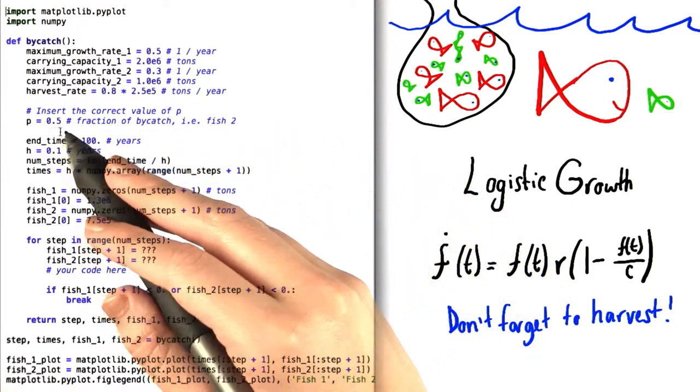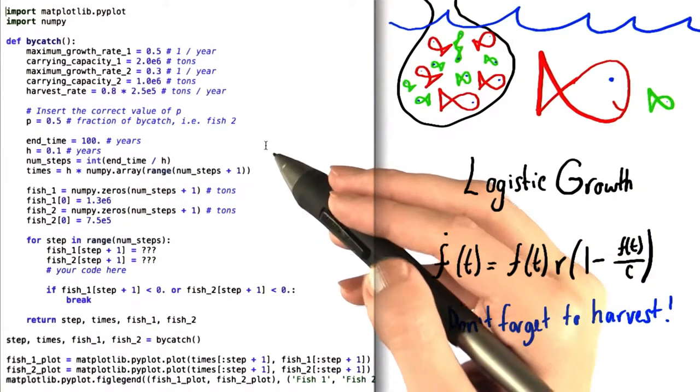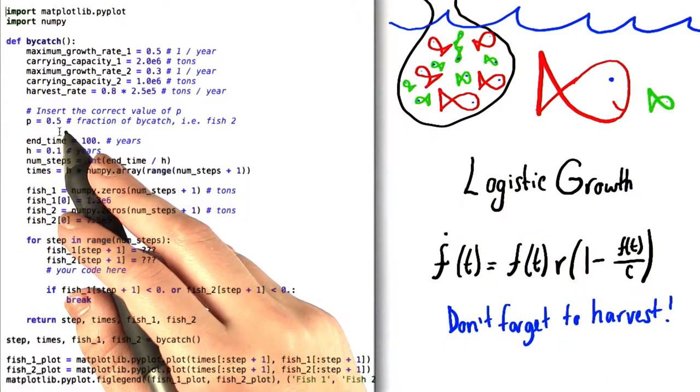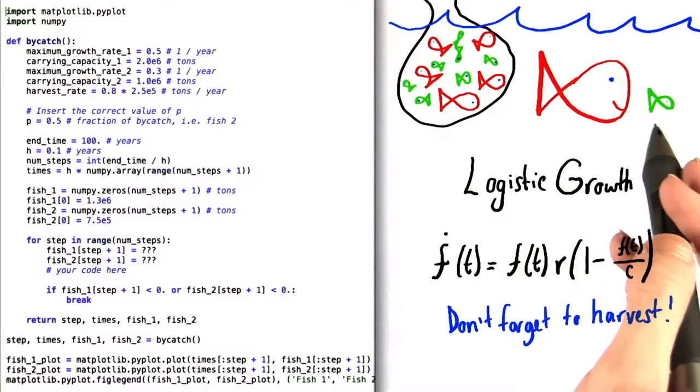Just to start, we've inserted a value of 0.5 for P, but what you're going to do is calculate the threshold value of P for fish 2 to not go extinct. In other words, what is the highest possible value of P that will allow for an equilibrium situation in the population of fish 2?